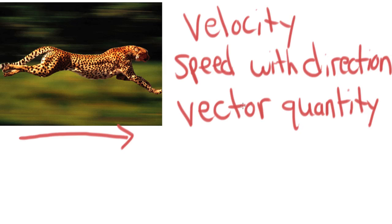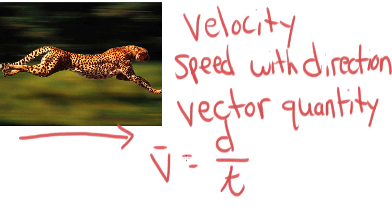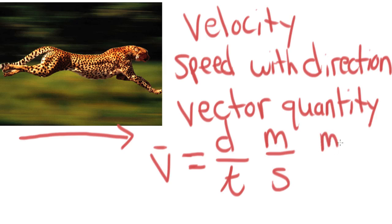The units for speed and velocity are a distance unit over a time unit. The average velocity equation is displacement divided by time, and we use the same form for speed: distance over time. Many times displacement and distance are the same value numerically. Units include meters per second, miles per hour, feet per second, or kilometers per hour — any distance unit divided by a time unit.